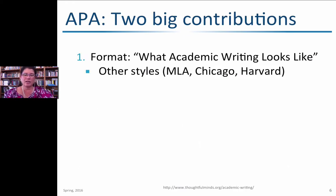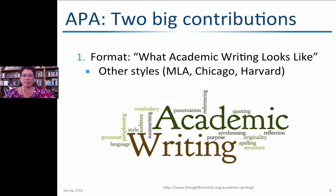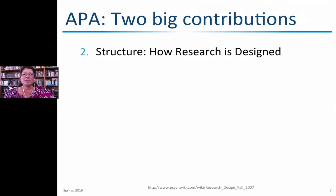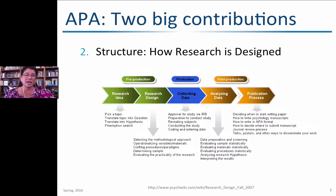The two biggest contributions from APA: first, defining what academic writing looks like. There are other styles — MLA, Chicago, Harvard — that determine how you reference things, how you cite things, how you format your paper, and for what audience. Second, APA helps us structure basic research design. The way an APA paper is generally laid out has a lot to do with how research is expected to be conducted within the field.